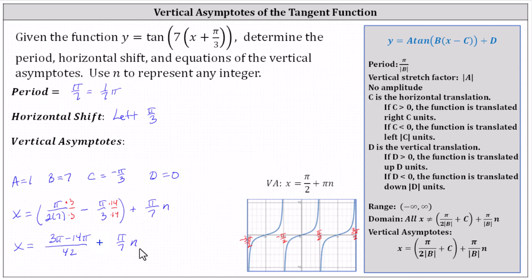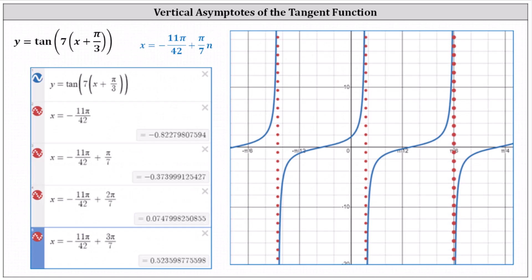Let's simplify one more time: three pi minus 14 pi is negative 11 pi, giving us x equals negative 11 pi divided by 42 plus pi divided by seven times n for the equations of the vertical asymptotes. Let's check this graphically. Using Desmos, in blue we have the graph of the given function. Using the equations for the vertical asymptotes, notice when n is zero we have x equals negative 11 pi divided by 42; when n is one, x equals negative 11 pi divided by 42 plus pi divided by seven; when n is two, x equals negative 11 pi divided by 42 plus two pi divided by seven, and so on. These equations do give us the vertical asymptotes for the given tangent function.